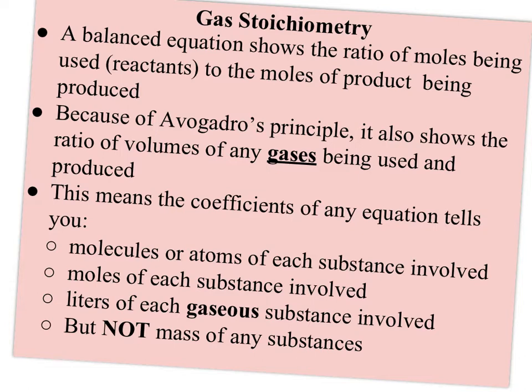The coefficients tell you the number of molecules or atoms of each substance involved. Think of this as a recipe — how many cups of each you need is the ratio. Because we don't usually deal with just molecules or atoms, we usually think of it as the moles of each substance involved. And now we can also think of it as the liters or volume of each gaseous substance involved.